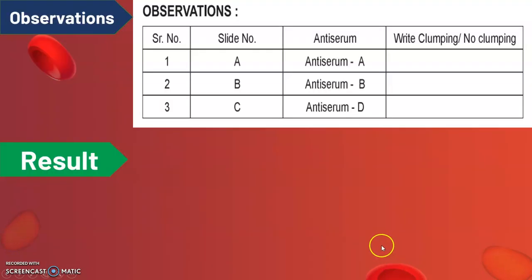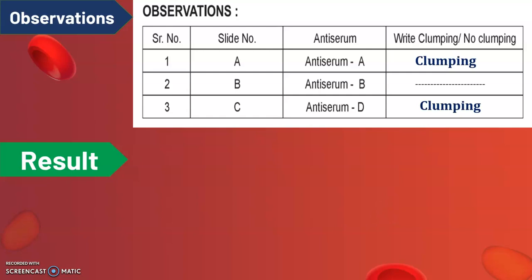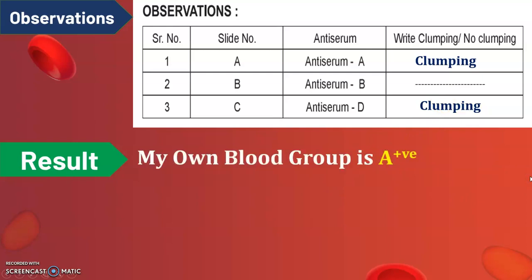How to write the result and complete your observation table depends on your slide. Whether clumping is occurring or not totally depends on your observation. In this demonstration, clumping is observed in A and D sections. Based on this, my own blood group is A positive, identified by the clumping pattern at those points.